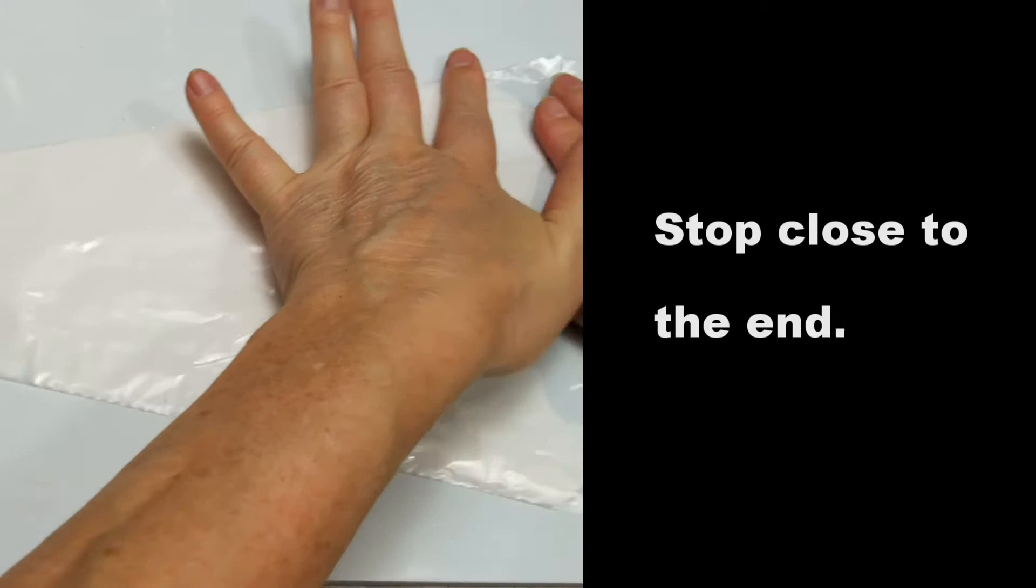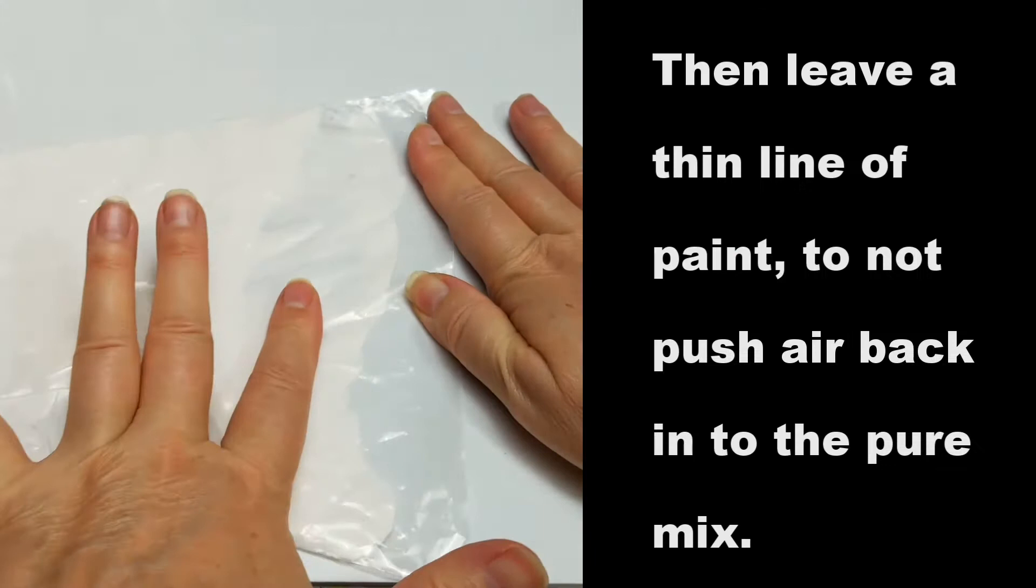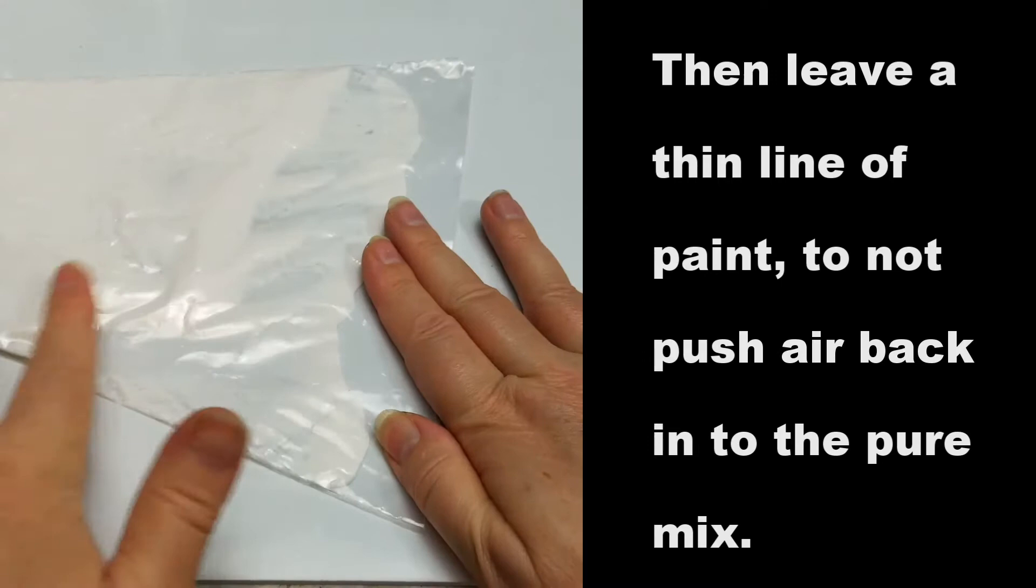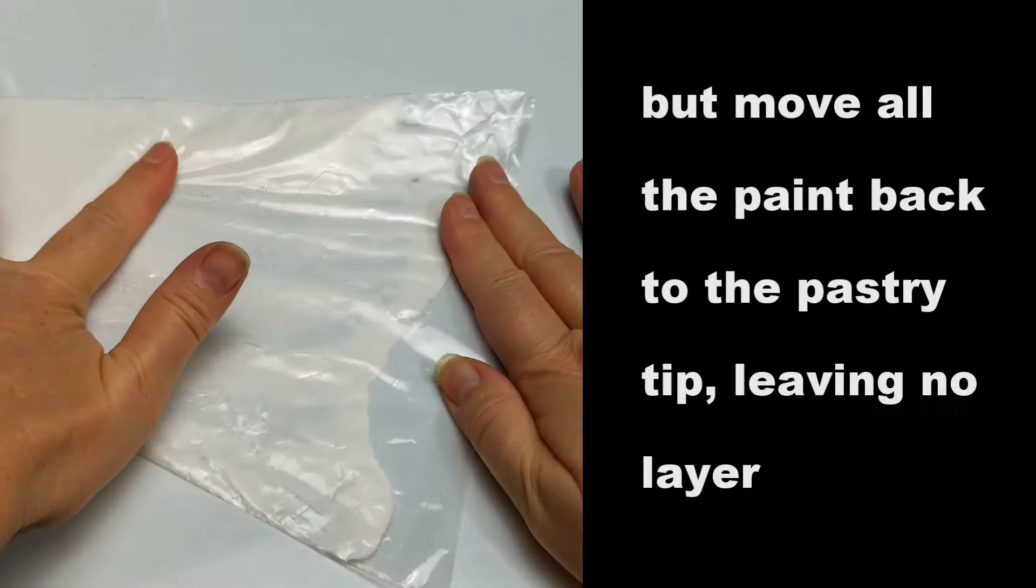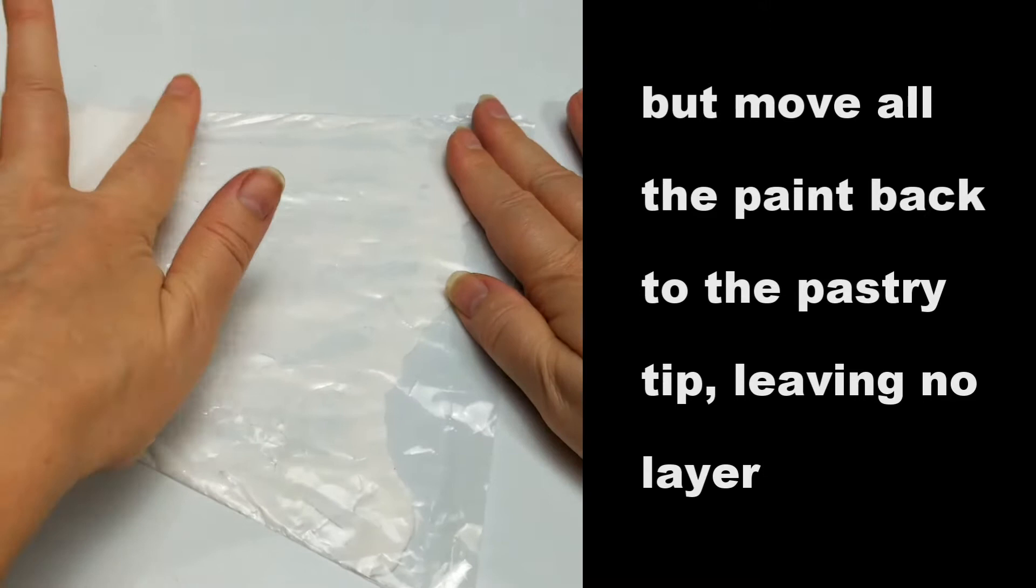Stop close to the end. Then leave a thin line of paint to not push air back into the pearl mix, but move all the paint back to the pastry tip, leaving no layer.